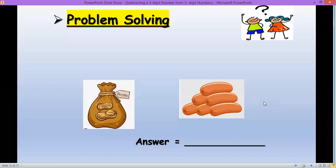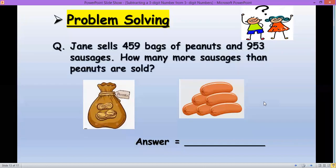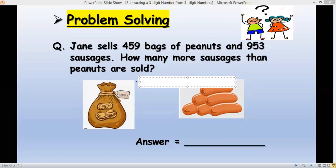Now let's have problem solving. Jane sells 459 bags of peanuts and 953 sausages. How many more sausages than peanuts are sold? So if we're going to compare this, we are actually looking at the difference between 953 and 459. So what are we going to do?